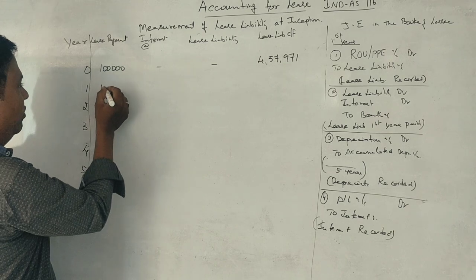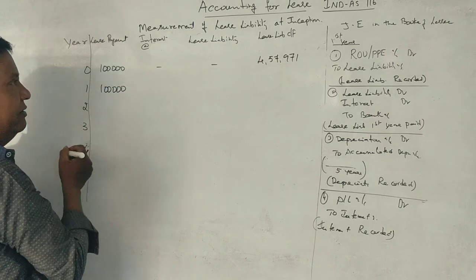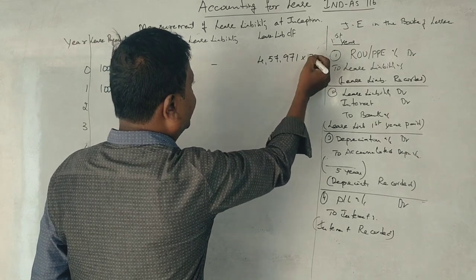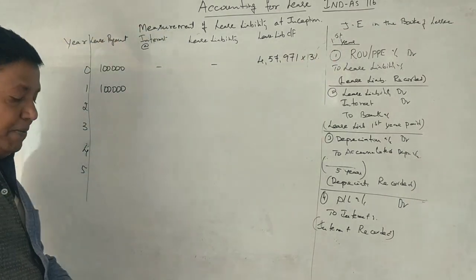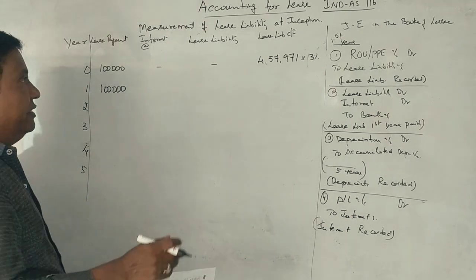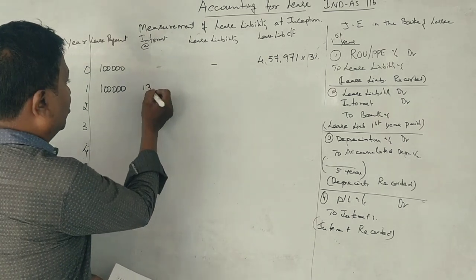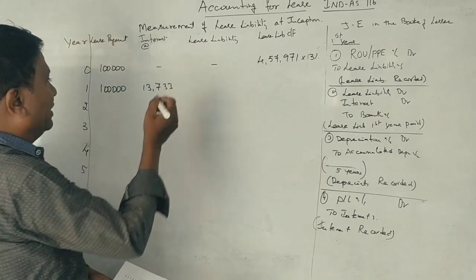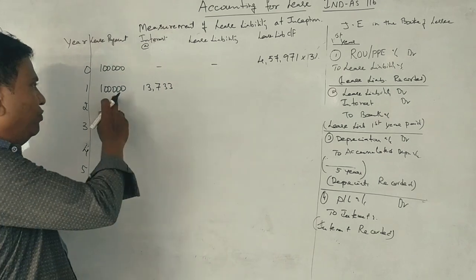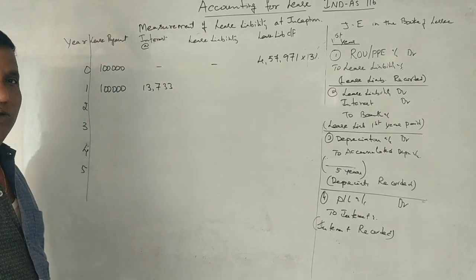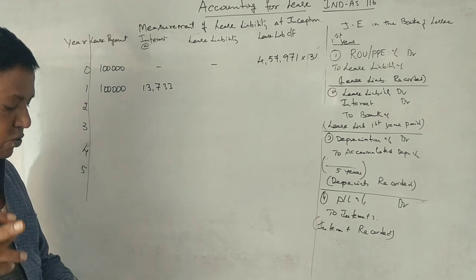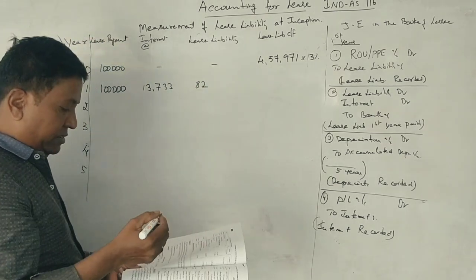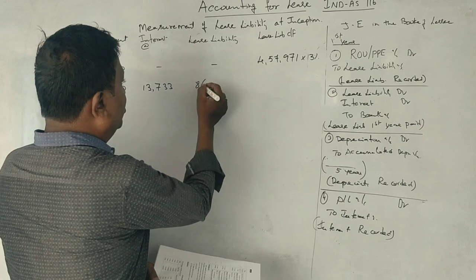Rs. 1 lakh payment. The total present value of the lease cost is 3% of the interest rate. 3% interest is 13,733 Rs. 1,00,000 interest is 13,733 Rs. Lease liability, 86,267 Rs.